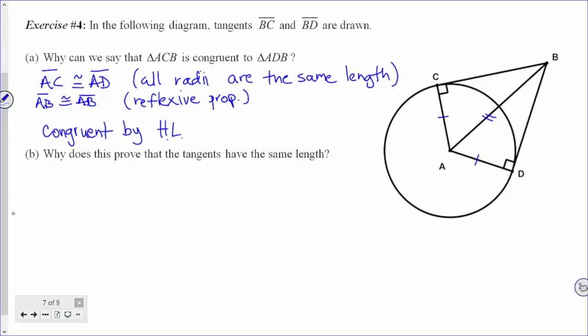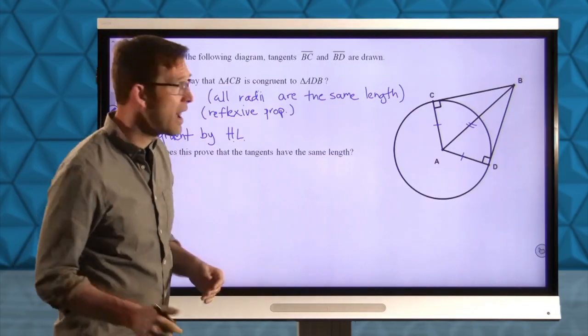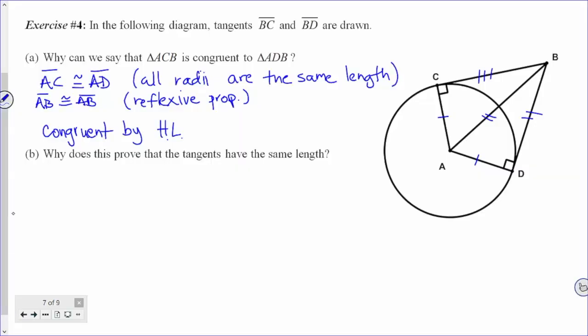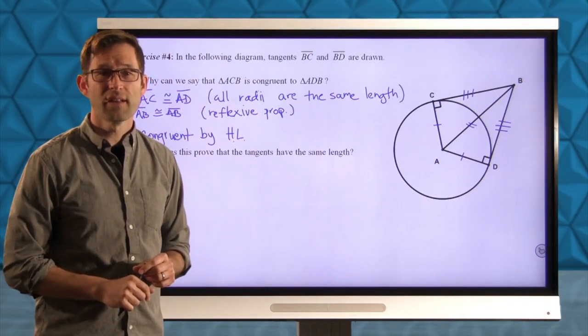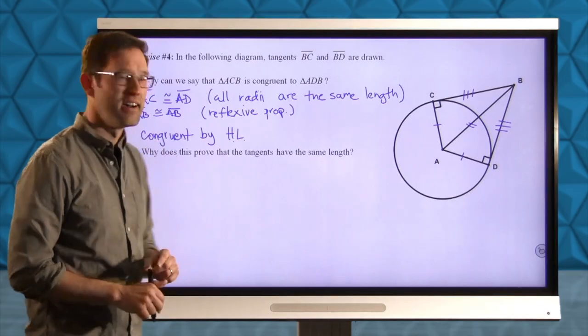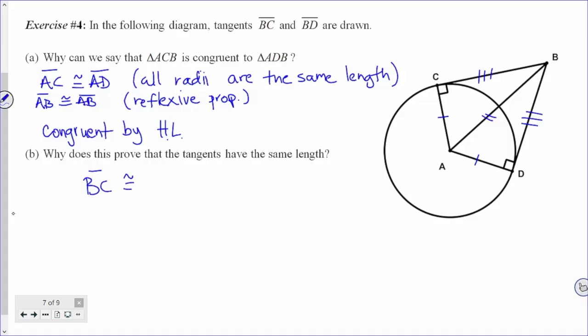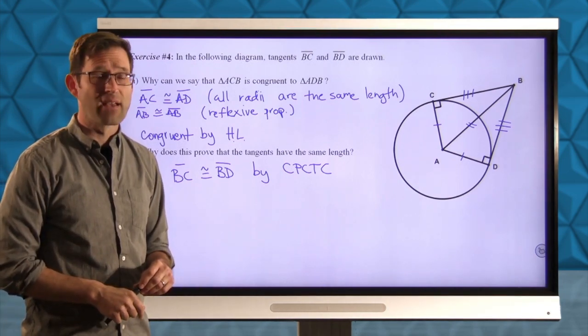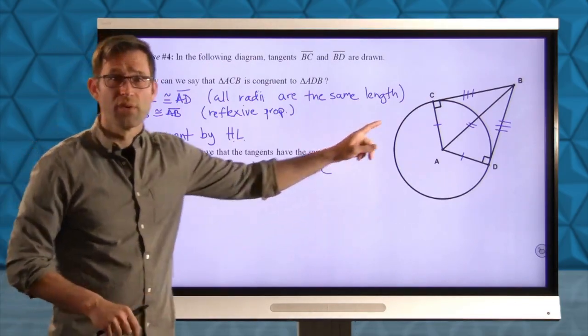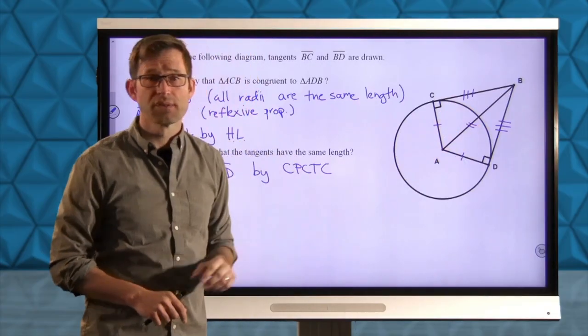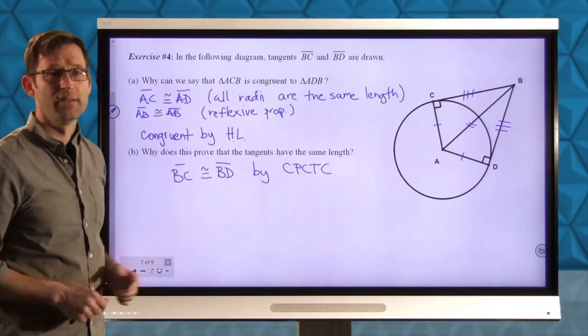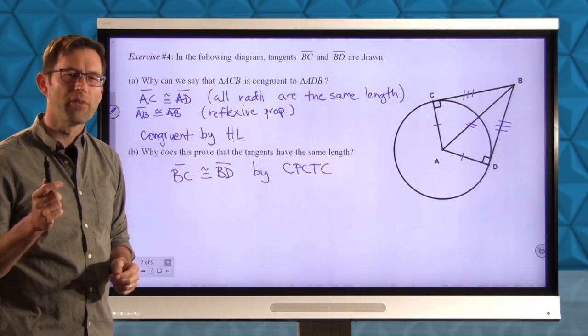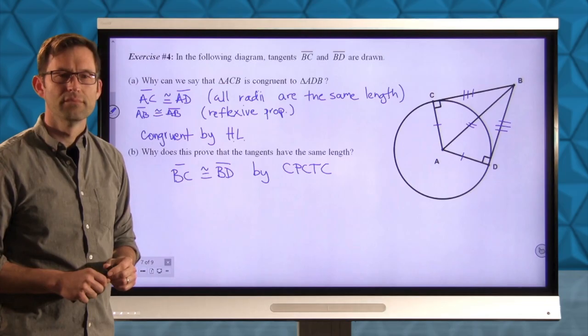And then to finish it off, why does this prove that the tangents have the same length? Why do I now know that BC and BD have to be the same length? It's been a little while, but why is that? So BC is congruent to BD by CPCTC. Corresponding parts of congruent triangles are congruent. It's that these two right triangles are the same. Let me step back a little bit. You can write anything down you need to. Then we'll move on and do some more problems involving this fact.